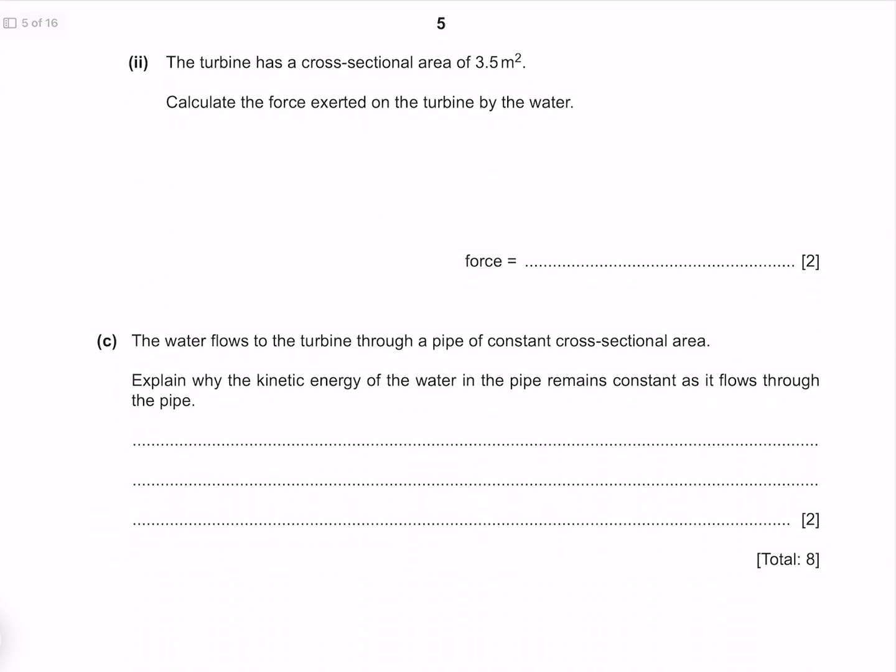The turbine has a cross-sectional area of 3.5 meter square. Calculate the force exerted on the turbine by the water. We know that pressure is force divided by area, and so force is pressure times area. Where our pressure is 1.6 times 10 to the 6 from last question, and our area is 3.5, which gives me 5.6 times 10 to the 6 newtons.